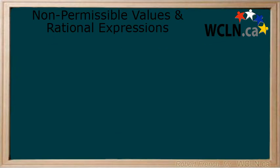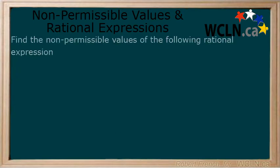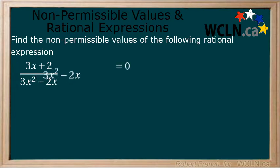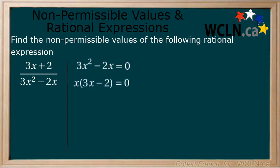Here is another example. Identify the non-permissible values of 3x plus 2 over 3x squared minus 2x. First, make the denominator equal to 0. Then solve for x by factoring out an x to get x multiplying 3x minus 2.